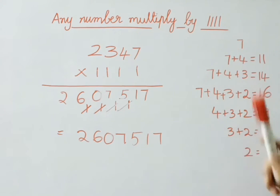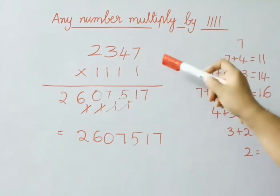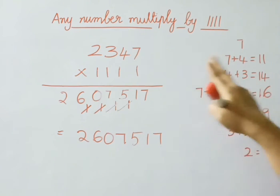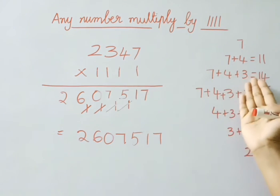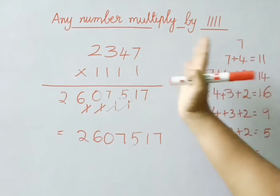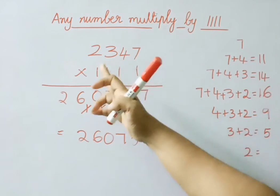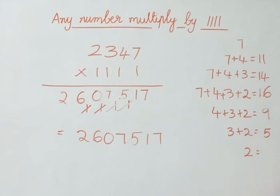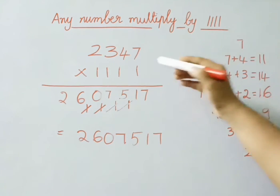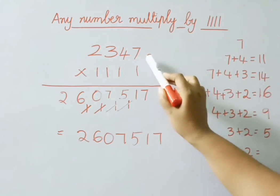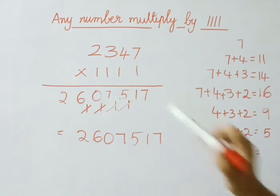Once again I am explaining this sum: 2,347 multiplied by 1111. So from right to left we are going to add the digits. First write 1 digit as it is — the first number is 7, so we write 7. Next from right to left add 2 digits: 7 plus 4 is 11. So 1, carry 1.